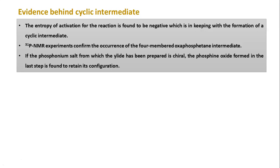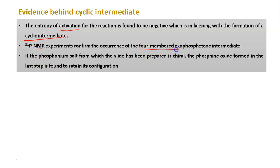Now let's look at the evidence for the cyclic intermediate (oxaphosphatene). First, the entropy of activation for this reaction is found to be negative, which is consistent with the formation of a cyclic (ordered) transition state. Second, ³¹P NMR confirms the presence of the four-membered oxaphosphatene ring, because it contains phosphorus and gives a specific characteristic peak.